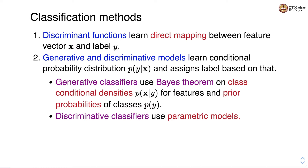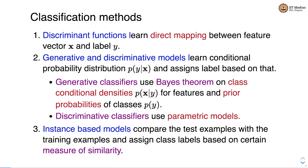Generative classifiers use Bayes' theorem on class conditional densities of features and prior probabilities of classes. Discriminative classifiers use parametric models to learn conditional probability distribution. Instance-based models compare the test examples with the training examples and assign class labels based on a certain measure of similarity. So these are three different classification methods we'll be studying in this module.